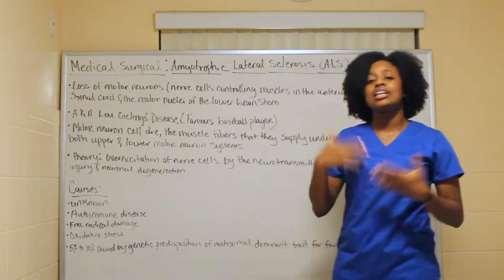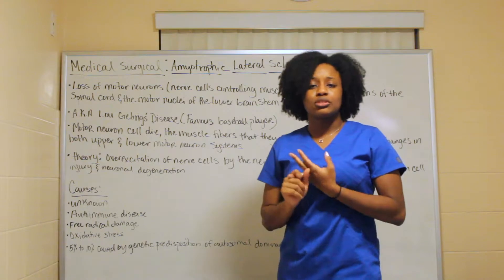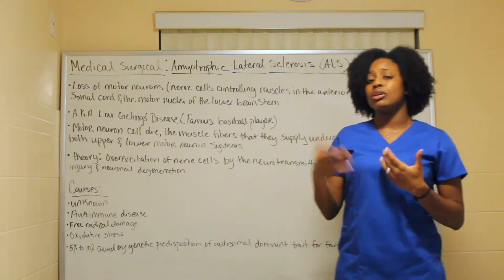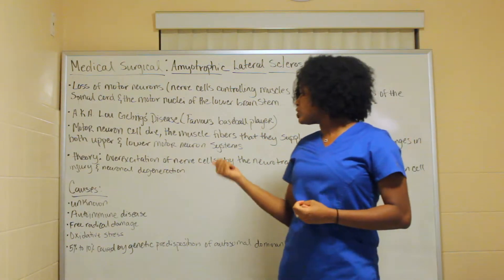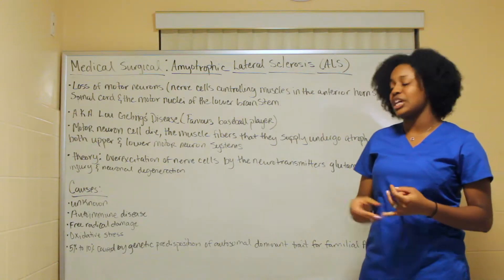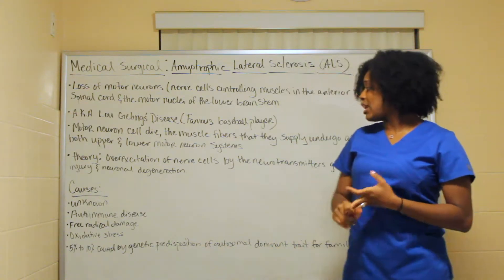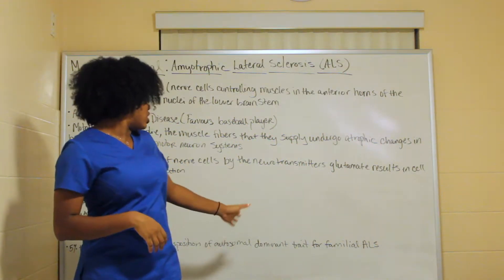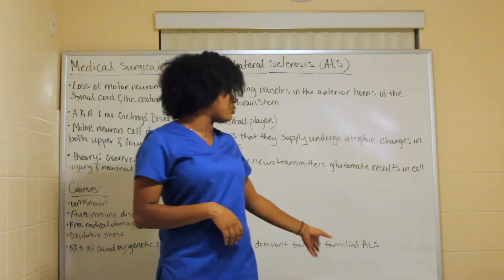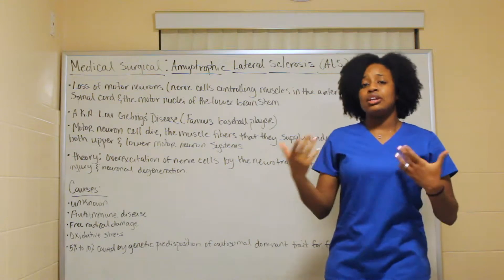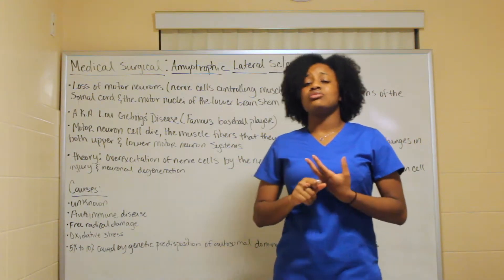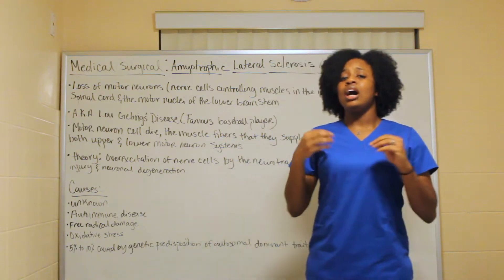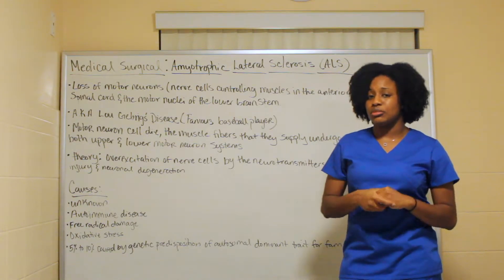The causes are again unknown, same as GBS and multiple sclerosis. We don't know exactly what is causing it, but it is related to an autoimmune disease. It can also be caused by free radical damage as well as oxidative stress. Five to ten percent is caused by genetic predisposition — the autosomal dominant trait for familial ALS. So it can stem from genetics or an autoimmune response triggered by a virus, stress, or other factors.